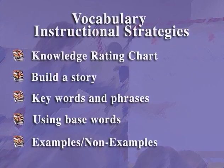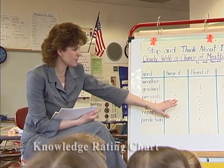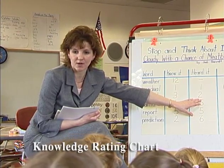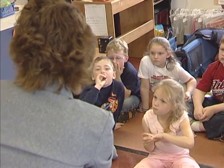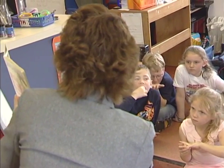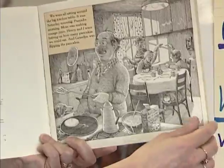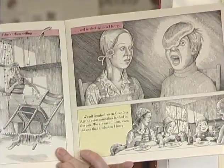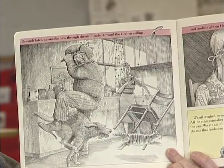Vocabulary Instructional Strategies: Knowledge Rating Chart. In segment 13, you saw how a vocabulary knowledge rating chart can be used to assess students' level of understanding of a set of words. Now watch how the teacher uses the information from this assessment to incorporate instruction on the meanings of this set of words into a read aloud of Cloudy with a Chance of Meatballs.